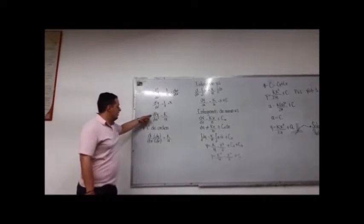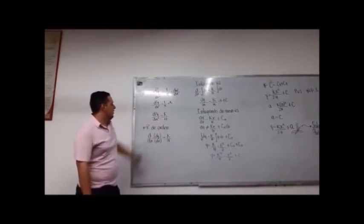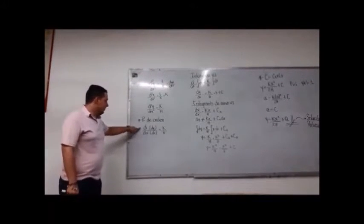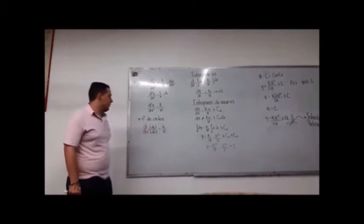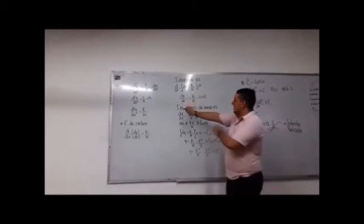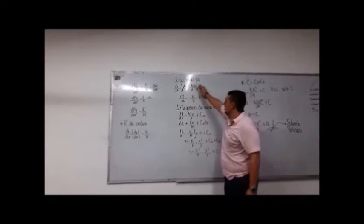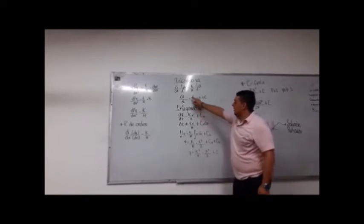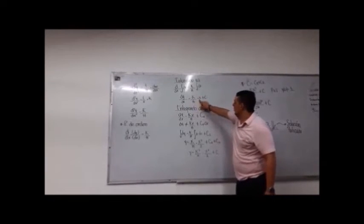Continúa con la segunda derivada de y sobre la segunda derivada de x, que es igual a k sobre H. Aplicando reducción de orden, la derivada de (dy/dx) es igual a k sobre H, lo que integrado nos da dy/dx igual a k sobre H por x más c1.